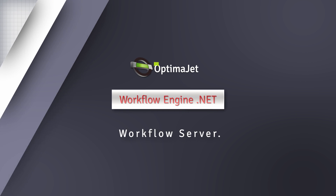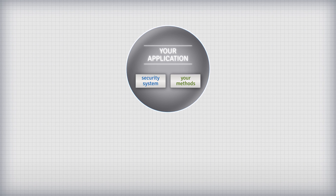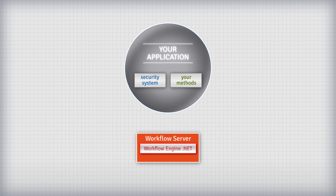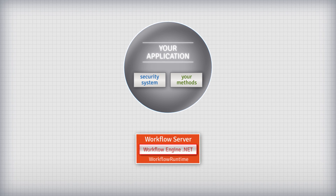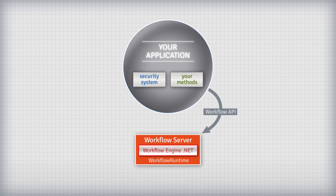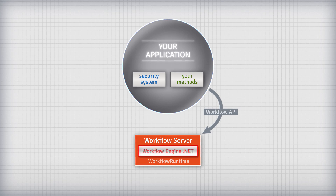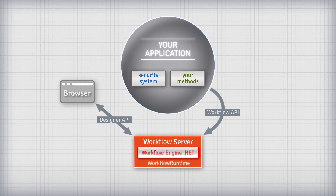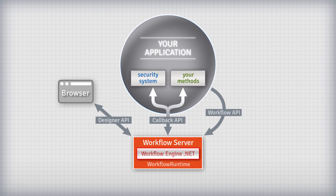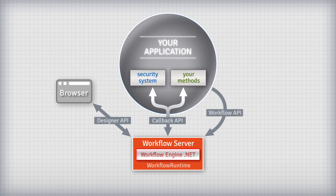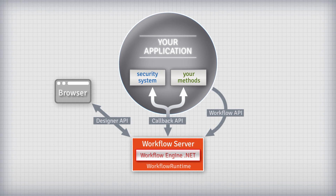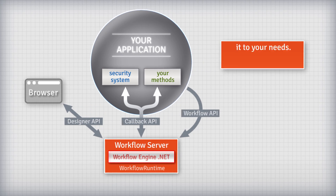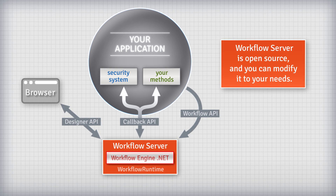Workflow Server: if you want to deploy WorkflowEngine.net outside your application, you can use Workflow Server. It is a separate HTTP service that contains Workflow Runtime. There are three types of API: Workflow API implements basic operations from Workflow Runtime; Designer API implements the designer's server interface; Callback API is used to call external methods such as external implementations of iWorkflowRuleProvider and iWorkflowActionProvider. Calls use HTTP POST. Workflow Server is open source and you can modify it to your needs.